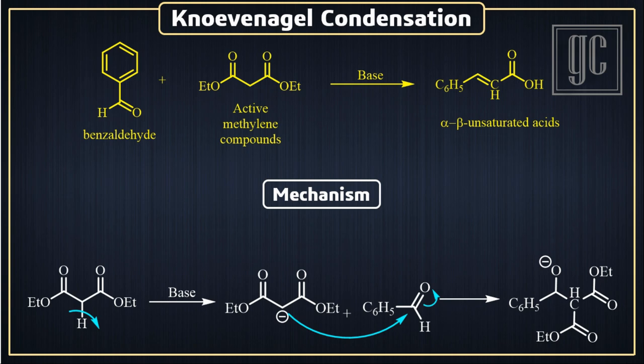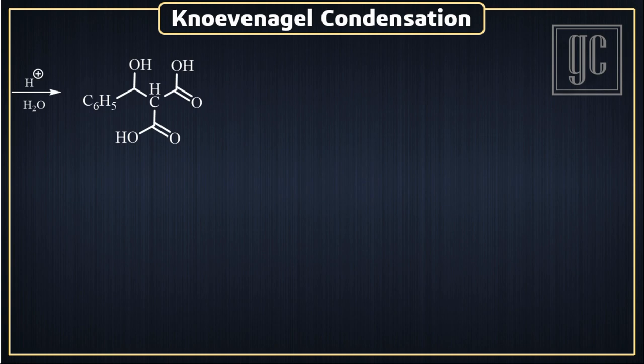The negative charge on oxygen is not chemically approachable to the ester groups, and because of that it will not react with them. Now, under acidic conditions, the negative charge on oxygen is neutralized. At the same time, acid hydrolysis of the ester groups takes place, and as a result, two acid groups are formed in the intermediate.